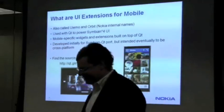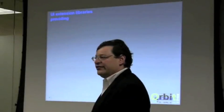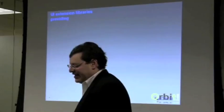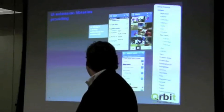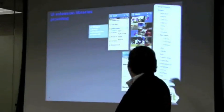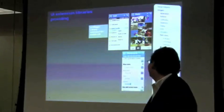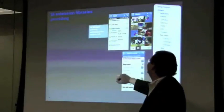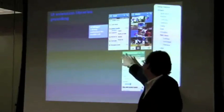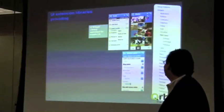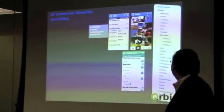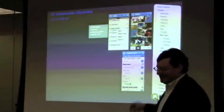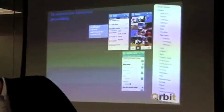Basically, Orbit is a set of UI extensions built on top of Qt, providing many things needed for mobile. The most obvious are a set of mobile widgets — things like list views, grid views, a chrome with a title bar on top. Here's just a small subset: group box and others — basically the set of widgets you need to build mobile applications.